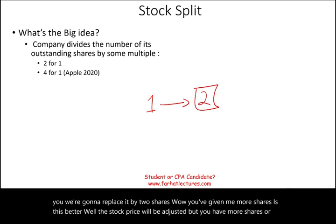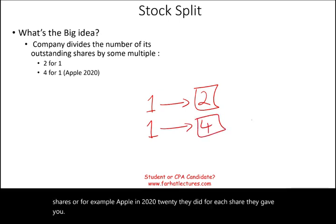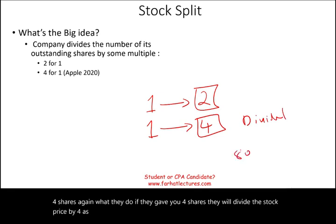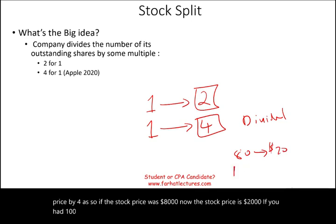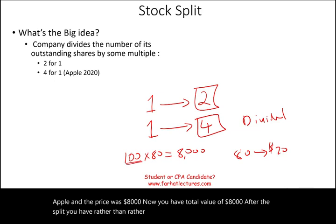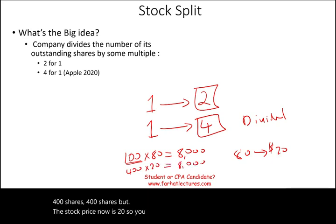For example, Apple in 2020 did a four-for-one split — for each share, they gave you four shares. What they do is divide the stock price by four as well. So if the stock price was $80, now the stock price is $20. If you had 100 shares of Apple at $80 prior to the split, your total value was $8,000. After the split, you have 400 shares at $20 each — you still have a total value of $8,000.